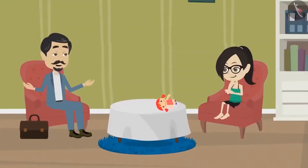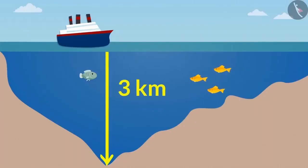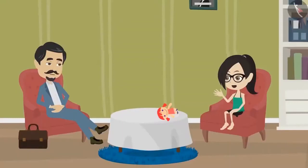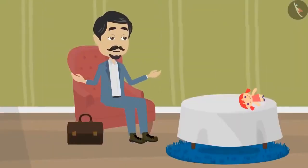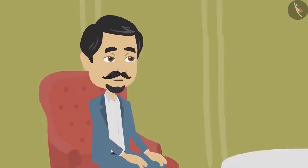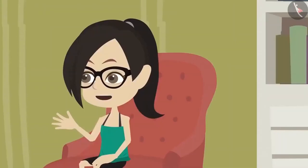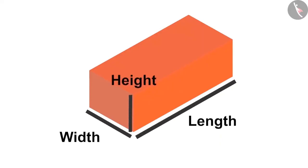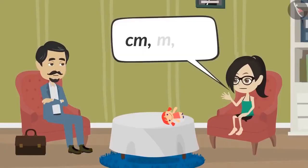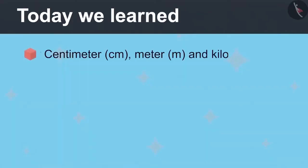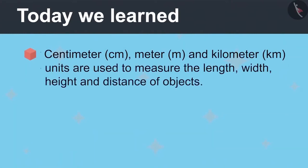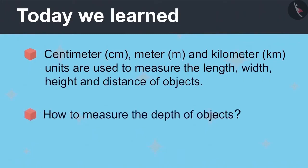Papa tells Vandana that there are areas in the sea which are more than 3 kilometers deep. Vandana is amazed. Papa says there are many objects in nature that surprise us, and they will study these in the next class. Vandana summarizes: the length, width, height, depth, and distance of objects are all measured in centimeters, meters, and kilometers. Today they learned centimeter, meter, and kilometer units are used to measure length, width, height, depth, and distance.